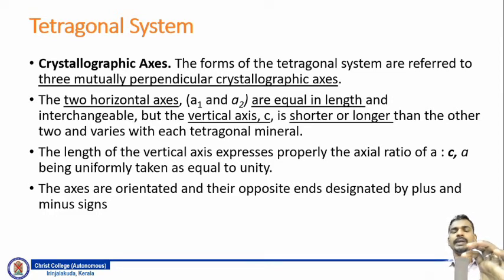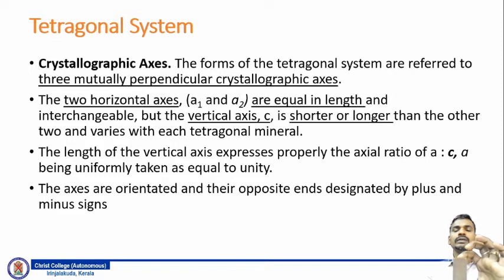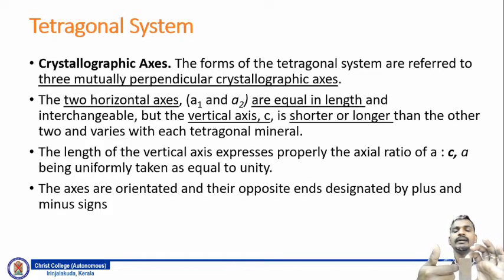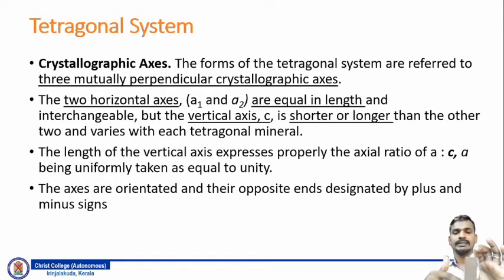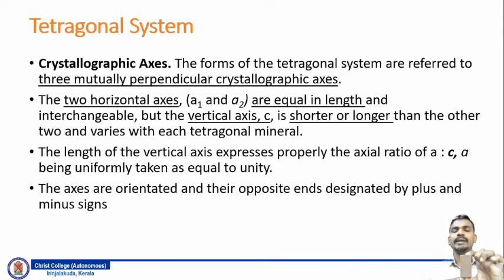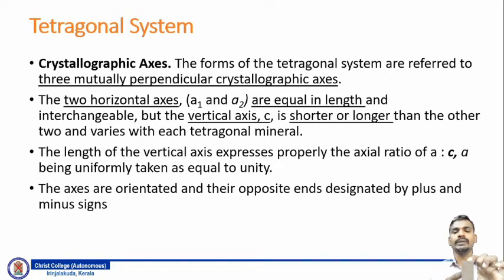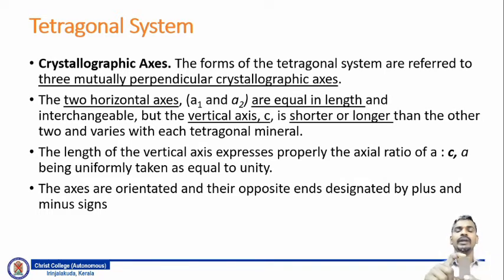Here I am showing a wooden crystal model. This mineral species is characterized by a long vertical axis c and two equivalent horizontal axes. The axis pointing towards the observer is named as plus a1, the axis pointing away is termed as minus a1, and the axis to the right is termed as minus a2. The upper side of the vertical axis is named as plus c and the lower side as minus c.